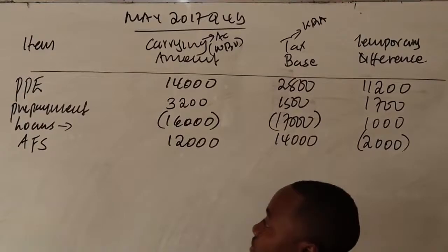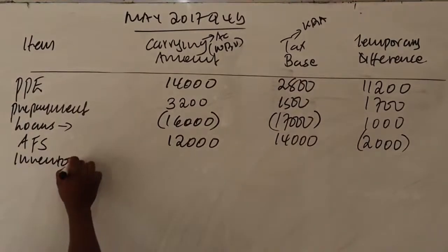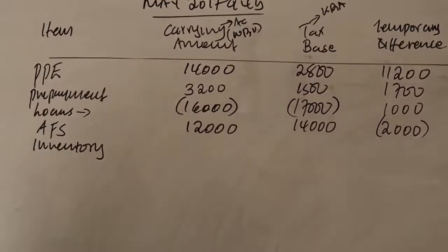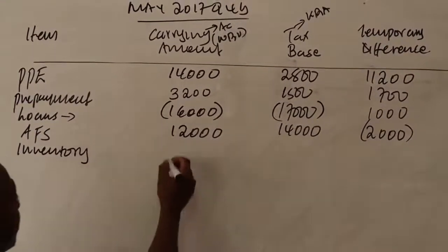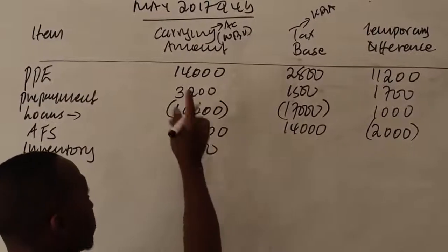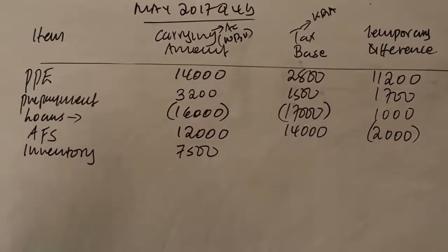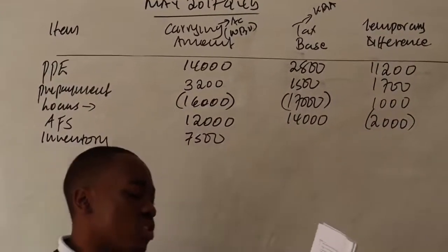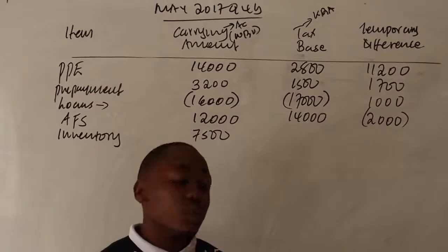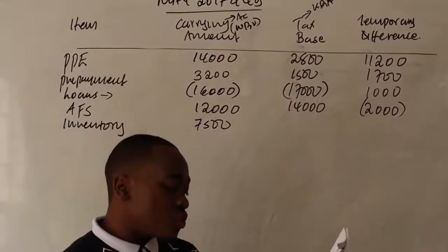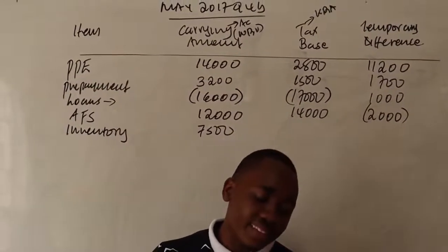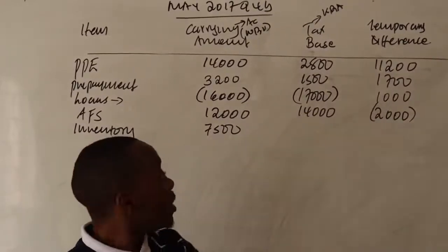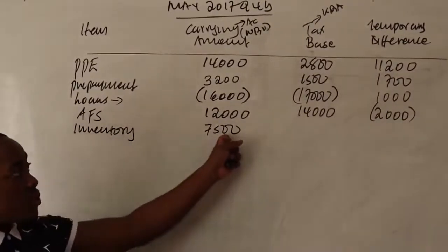For additional information number two — inventory. From the statement of financial position, inventory in current assets is 7,500 — that's the carrying amount. Note two tells us inventories are stated at fair value less cost to sell, which is lower than the original cost, due to a general provision for price decline of 500.